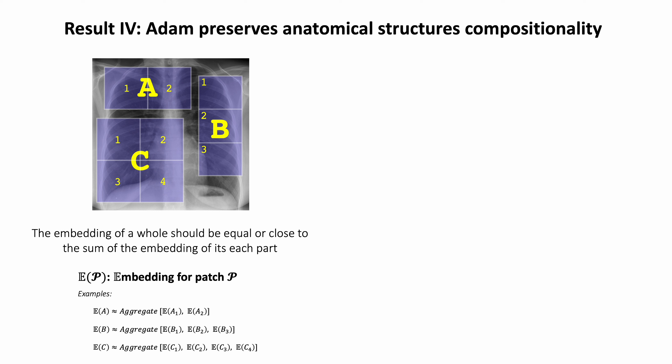We investigate ADAM's capability in preserving anatomical structure compositionality in its learned embedding space. To do so, we extract random patches from images and decompose each patch into two, three, or four non-overlapping sub-patches. We then extract features of each patch and sub-patches using ADAM, compute cosine similarity between the embedding of each patch and the aggregate of its sub-patch embeddings, and visualize the similarity distribution with a KDE plot.